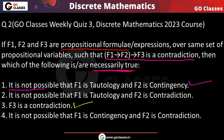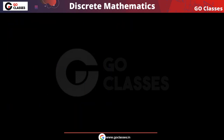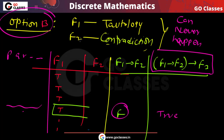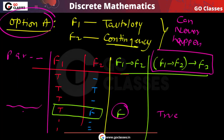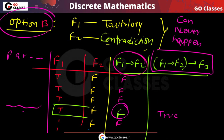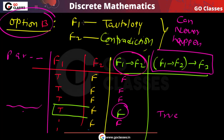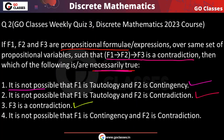Option B says: it is not possible that f1 is a tautology and f2 is a contradiction. If f1 is a tautology and f2 is a contradiction, then f1→f2 becomes true implies false, which is false — making f1→f2 a contradiction. But we established f1→f2 must be a tautology. So this can never happen. Option B is also correct.